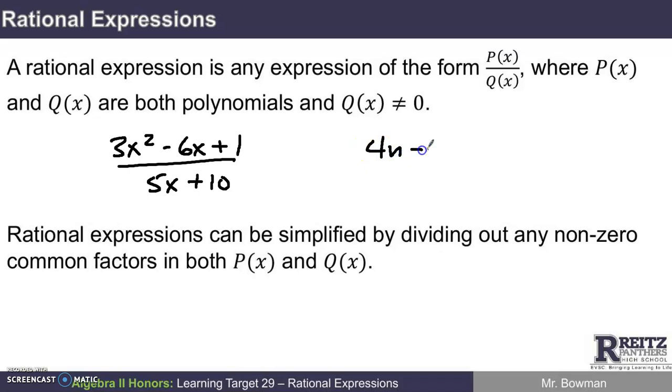Here's another: 4n minus 6 divided by 3n squared plus 5n. Those are both polynomial expressions, top and bottom. And if you want to simplify them, one way to do it is by dividing out any non-zero common factors in both the numerator and denominator.